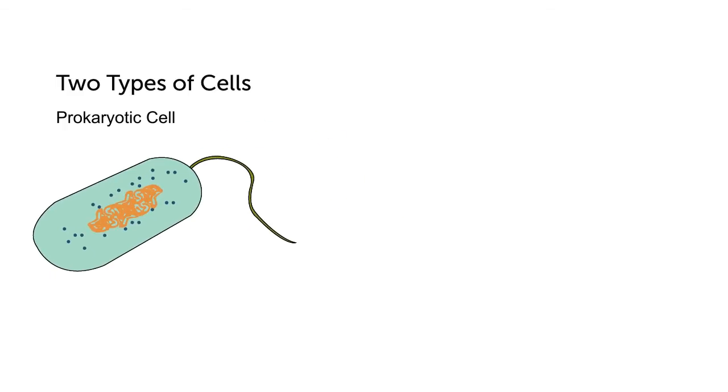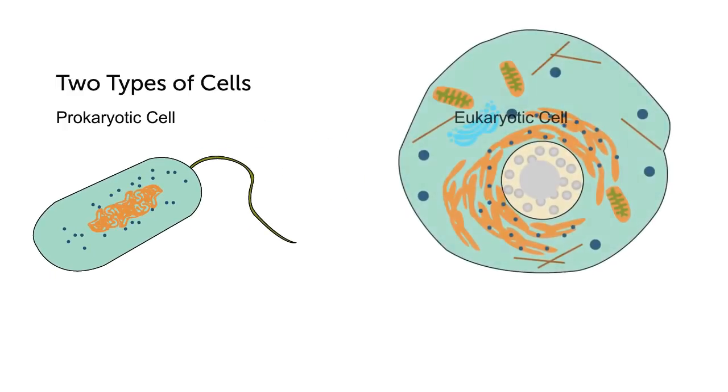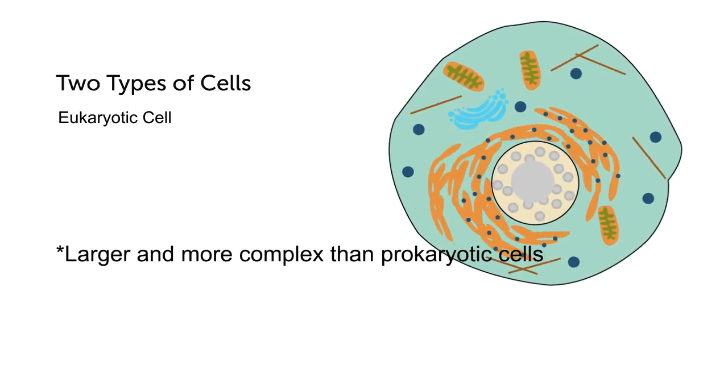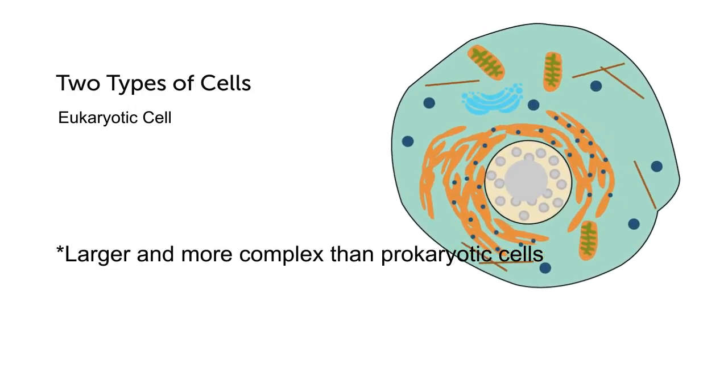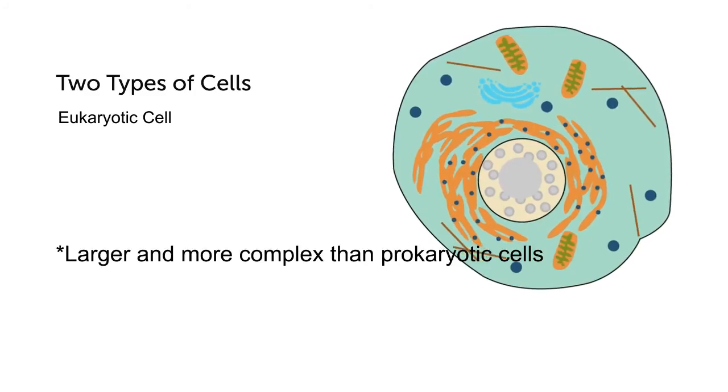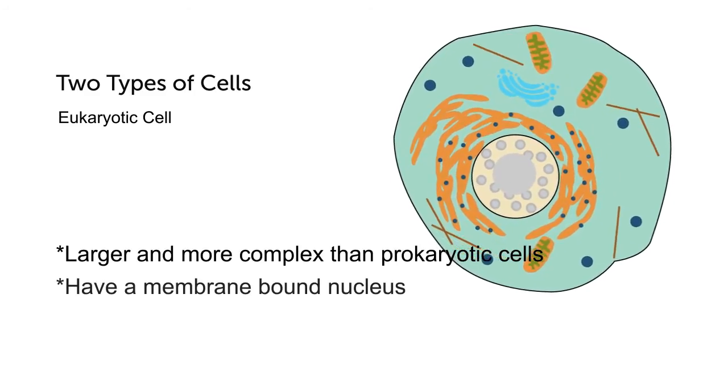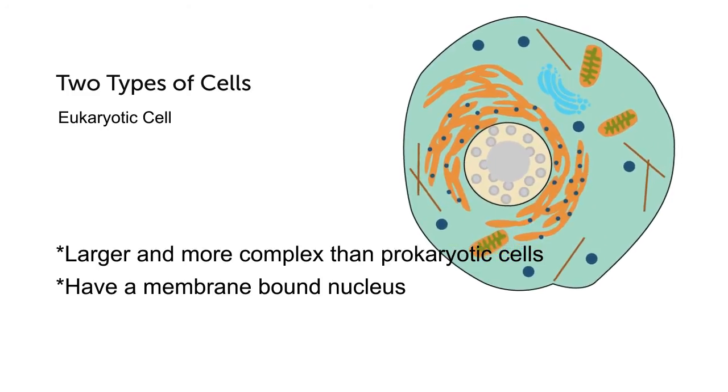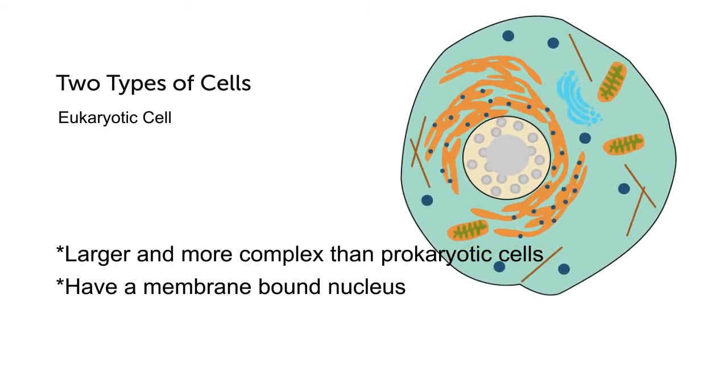The larger and more complex type of cells are eukaryotic cells. Large living plants and animals are made up of trillions of eukaryotic cells. Eukaryotic cells have a membrane-bound nucleus, which is a sac inside the cell that contains the cell's DNA.